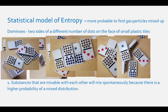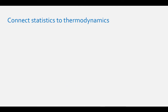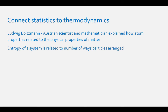Using large numbers of dominoes or gas particles, we come to two conclusions. One, substances that are mixable with each other will mix spontaneously because there is a higher probability of a mixed distribution. Two, the most probable mixing pattern produces a uniform distribution of particles throughout the volume they occupy. To connect this statistical view of entropy to thermodynamic systems, we will rely on the work of Ludwig Boltzmann, an Austrian scientist who developed an explanation of how atom properties related to the physical properties of matter. He proposed that the entropy of a system is related to the total number of ways that particles could be arranged, and the number of different arrangements is defined by the variable W.